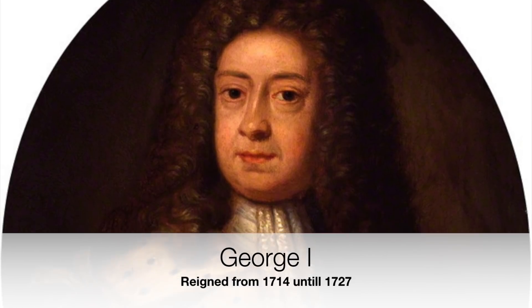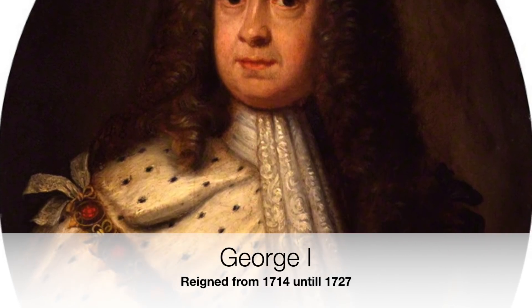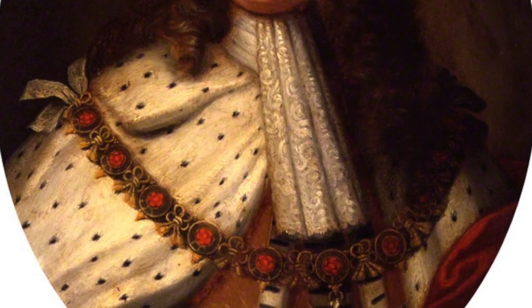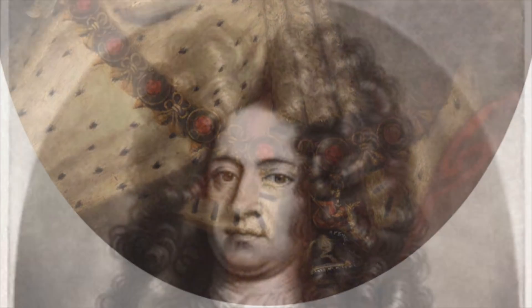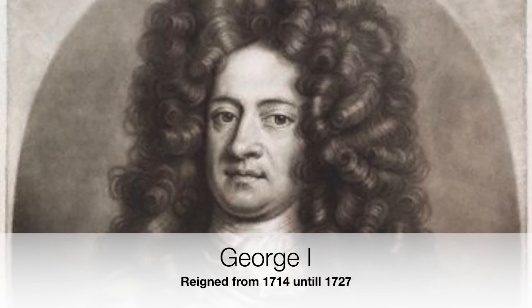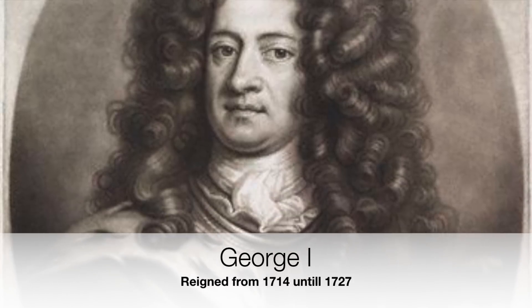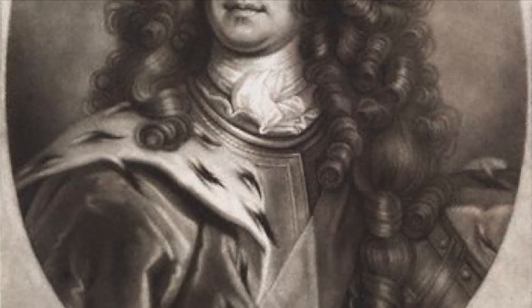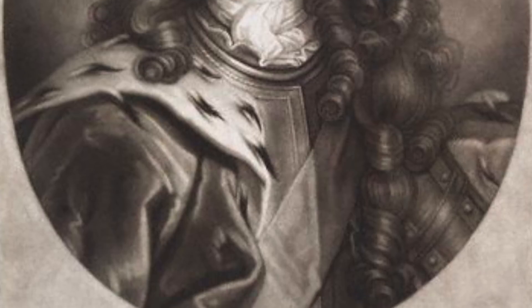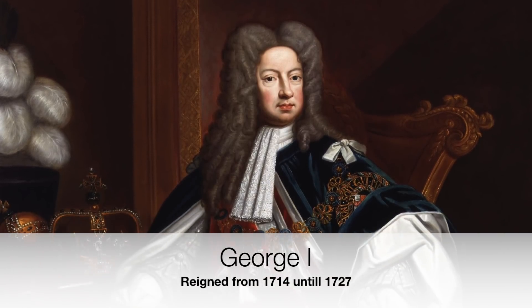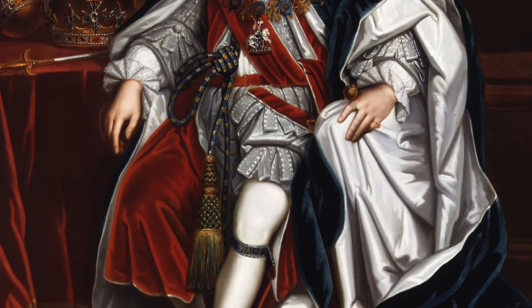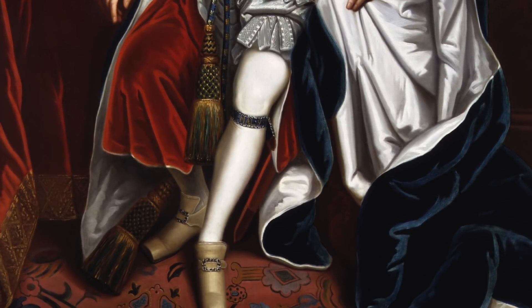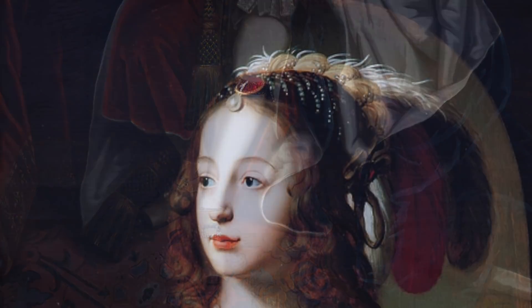George I was King from 1714 until 1727. Like his son, he was born in Hanover, Germany. After the death of his mother and second cousin, Queen Anne, he ascended to the throne as Anne's closest living Protestant relative under the Act of Settlement 1701. Jacobites, who wanted to return the line of succession to the senior line of the House of Stuart, attempted but ultimately failed to depose George and replace him with James Stuart, Anne's Catholic half-brother. And George I is a direct descendant of Sophia, his mother.